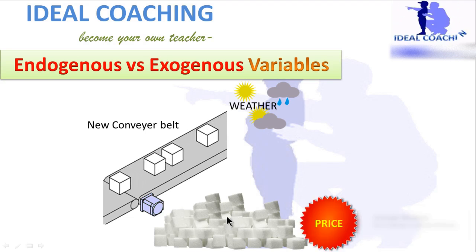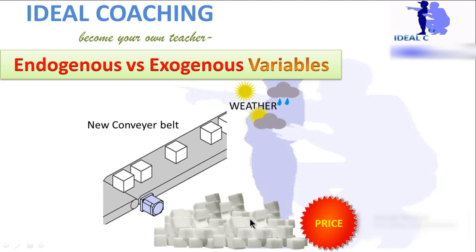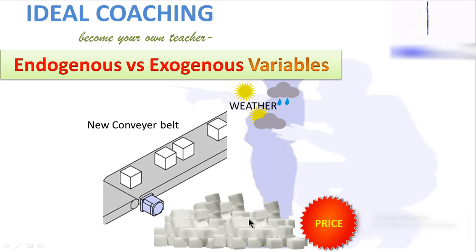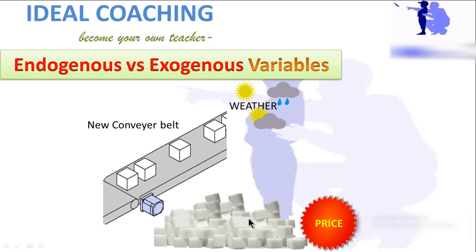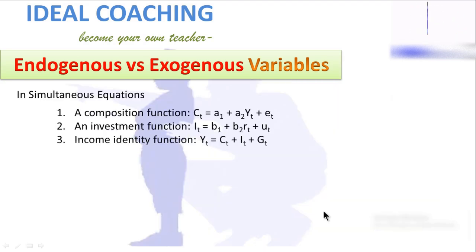If we talk about price, the production of sugar will not affect prices if the firm is small. But if the firm is big, injecting too much sugar into the market could also affect the price. So price is partially exogenous for companies with less manufacturing capacity and endogenous for factories producing in large quantities.